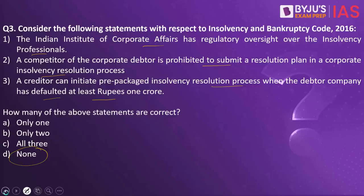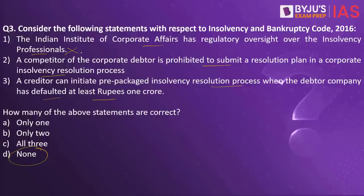When you look into the first statement, the Indian Institute of Corporate Affairs has regulatory oversight over the insolvency professionals — this is a wrong statement. It is the Insolvency and Bankruptcy Board of India which has regulatory oversight over insolvency professionals. This board happens to be one of the key pillars of the implementation of the code. So the first statement is wrong. The second statement — a competitor of the corporate debtor is prohibited to submit a resolution plan — is also wrong. A competitor would be able to do so, but a willful defaulter would not. A willful defaulter is prohibited to submit a resolution plan. So the second statement is also wrong.